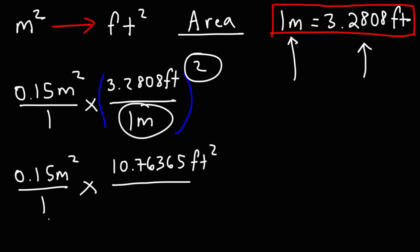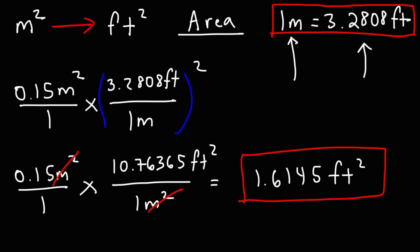1 meter raised to the second power, which is 1 meter times 1 meter. That's going to be 1 square meter. So now the unit square meters will cancel. And then we could just multiply across. So it's 0.15 times 10.76365. So the answer is going to be approximately 1.6145 square feet. And so that's how you can convert square meters to square feet.